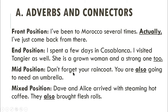These connectors can be used in different positions of a sentence — in the front position, at the end position, in the middle of the sentence, and also in the mixed position. 'She is a grown woman and a strong one too.' Here the connector is used at the end of the sentence. 'Don't forget your raincoat. You are also going to need an umbrella.' Here 'also' is used in the middle of the sentence. 'Dave and Alice arrived with steaming hot coffee. They also brought flash rolls.' Here 'also' is used in the mixed position.